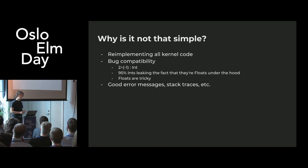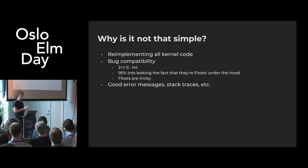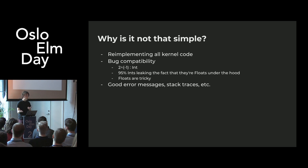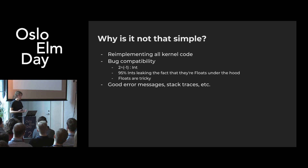The standard library uses a lot of JavaScript. If you want to be bug-compatible with the standard library, you need all the different quirks and edge cases of the JavaScript implementation backing Elm — you need to reimplement that. I've been spending a lot of time implementing JavaScript semantics in Haskell, which is not something I recommend. About 95% of all the bugs I've seen in the Elm compiler are related to the fact that integers are actually doubles under the hood. If you take large integers and multiply them, they eventually overflow to infinity, and then you can divide by it and get NaN, and so on.